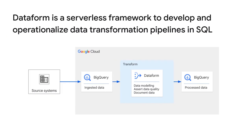Documentation and metadata are afterthoughts because they need to be managed in an external catalog. That's where Dataform comes in. With Dataform, you can develop and operationalize scalable data transformation pipelines in BigQuery using SQL. The framework enables data teams to build a central data model — a single source of truth — with tables that are curated and continuously updated.